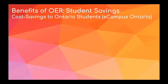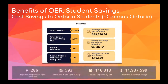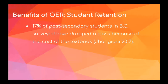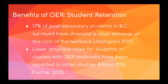eCampus Ontario became the central hub for OER in Ontario in 2017, and since that time over 200 Ontario post-secondary educators have adopted OER textbooks from their open library, saving Ontario students almost $12 million overall. In addition to those savings, OER can also benefit student retention. A 2017 survey found that 17% of respondents from BC stated they had dropped a class due to the cost of textbooks. Full links to these studies can be found in our references, and we'll send the slide decks out after the presentation.